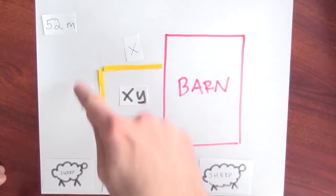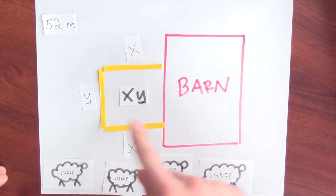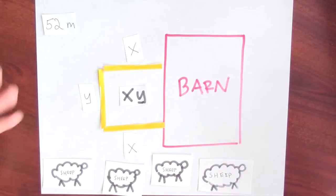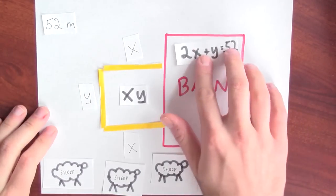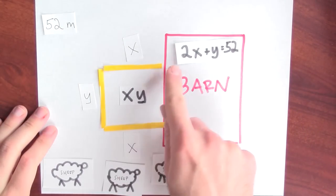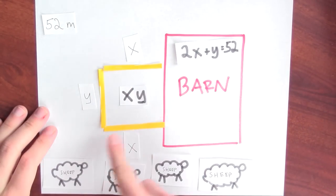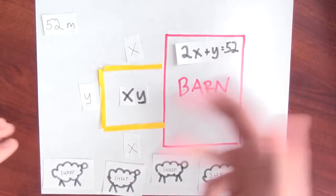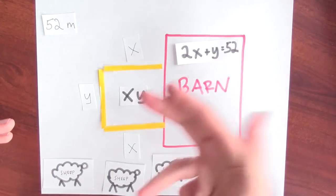But there's a constraint. I can't simply build this fence as big as I like because I've only got 52 meters of yellow fence to begin with. So the constraint is that the length of this fence, which is 2x plus y, is 52.